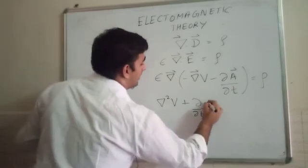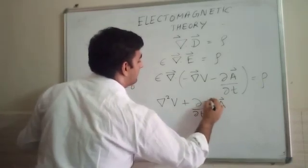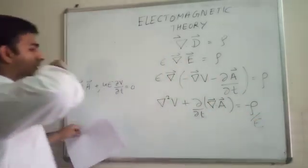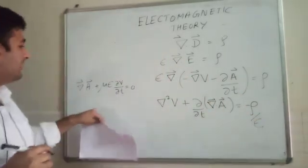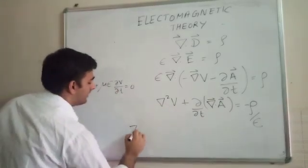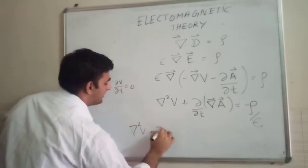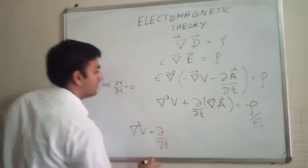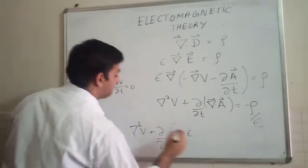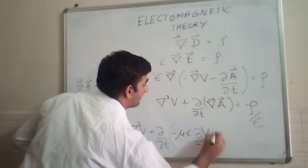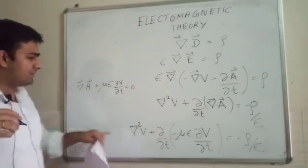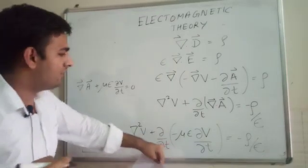Expanding the divergence gives: del-squared V plus d/dt of (divergence of A) equals minus rho over epsilon. Substituting the Lorentz gauge condition — divergence of A equals minus mu epsilon dV/dt — we get: del-squared V minus mu epsilon d²V/dt² equals minus rho over epsilon. This is also an inhomogeneous wave equation, this time in the scalar potential V.